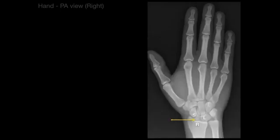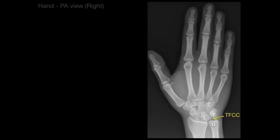Now let's do some joints. Between the radius and the carpals — specifically the scaphoid and the lunate — is the radiocarpal joint; it's a synovial joint. Over here between the ulna and the triquetrum and part of the lunate, there is a structure called the TFCC, the Triangular Fibrocartilaginous Complex. It's a cushion support between the ulna bone and the proximal row of carpals, specifically the lunate and triquetrum.